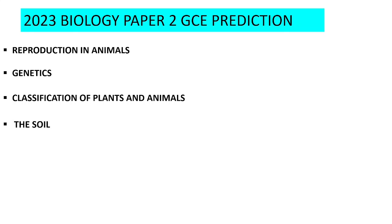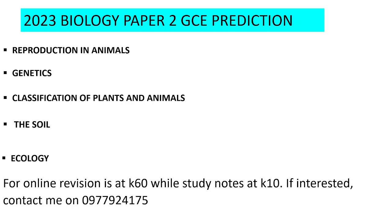Soil also hasn't been coming often, about three times in the period from 2015 to 2022, so expect a question from here this year. Ecology is more like genetics in frequency — questions have been coming often from this topic. For example, last year there was the carbon cycle, so this year consider maybe the nitrogen cycle. Make sure to take care of these topics.